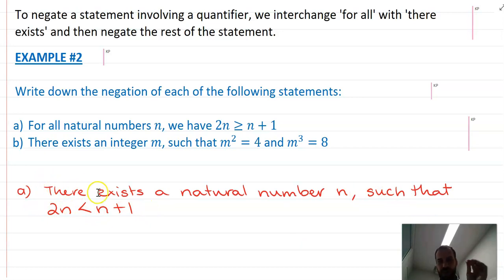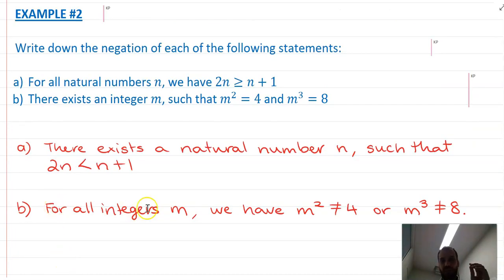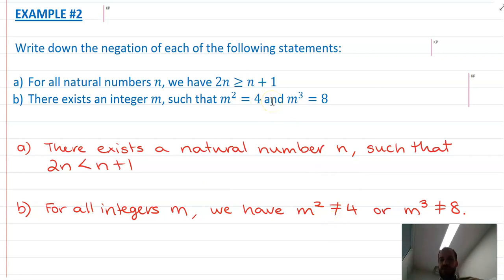We just need to find something that breaks that. Now what about this second statement: there exists an integer m such that m squared equals 4 and m cubed equals 8? We swap 'there exists' to 'for all' and write the opposite statement: for all integers m, m squared is not equal to 4 or m cubed is not equal to 8. We've swapped 'there exists' for 'for all', changed the equals to not equals, and also swapped the 'and' to an 'or'.